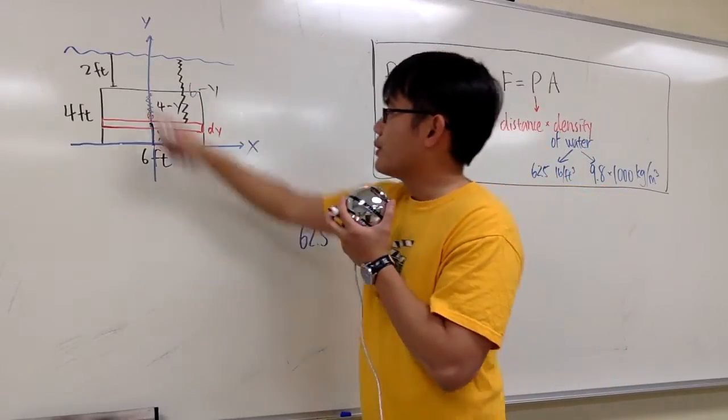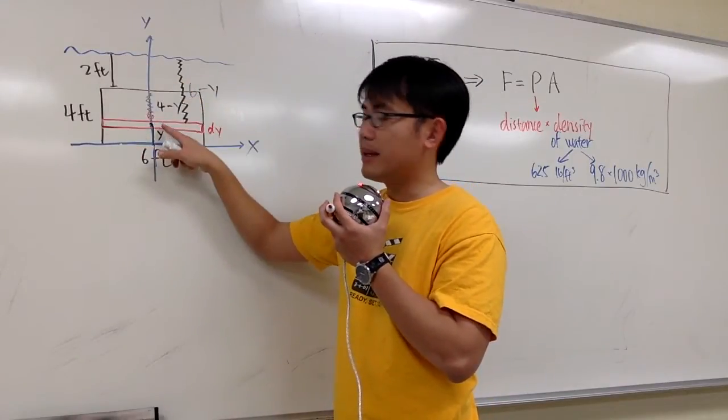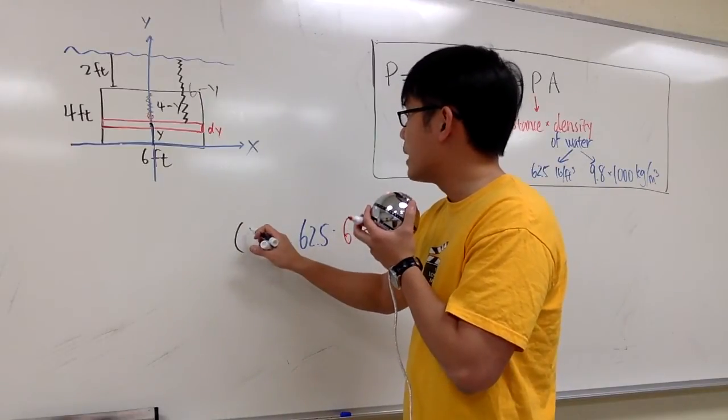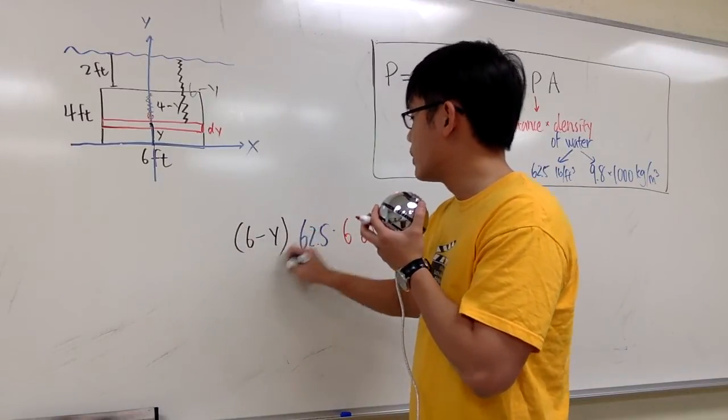Okay? Well, you can look at the whole thing is 6 minus y. 6 minus y. Doesn't matter. Anyways, that's the distance. So we multiply by 6 minus y.